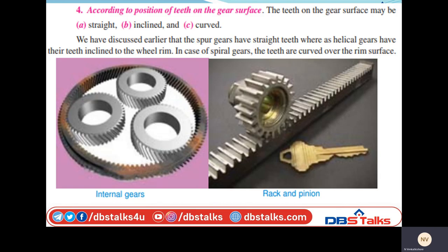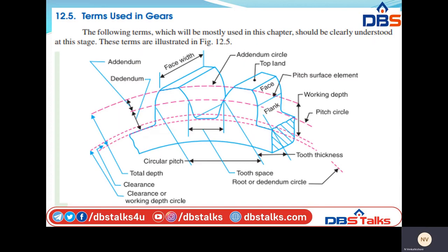According to the position of teeth on the gear surfaces — if you see the diagram, teeth may be straight or inclined or curved. So the gear teeth on the gear surface may be straight, inclined, or a curve. Examples of rack and pinion and internal gears — these types of gear teeth are available in vehicles with teeth inclined to the wheel ring. We need to understand these terms during the solving of problems.